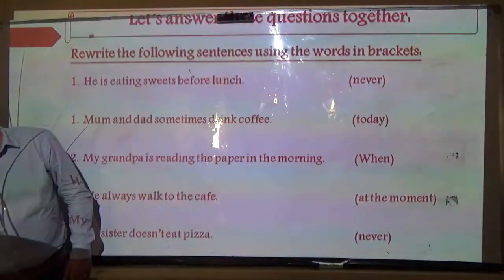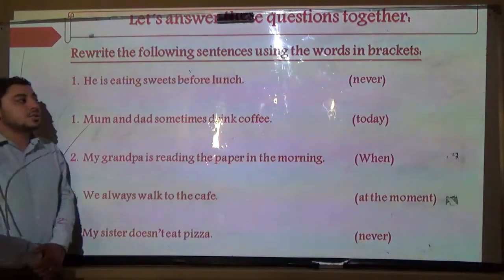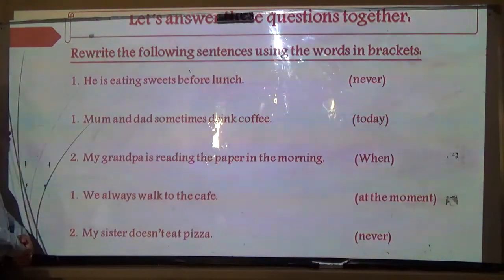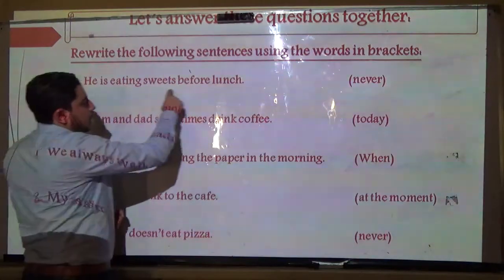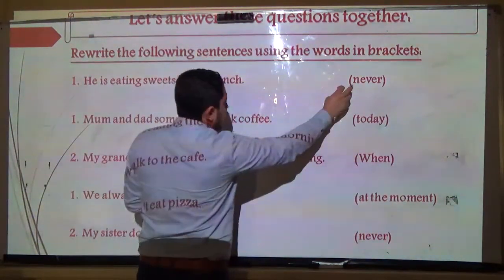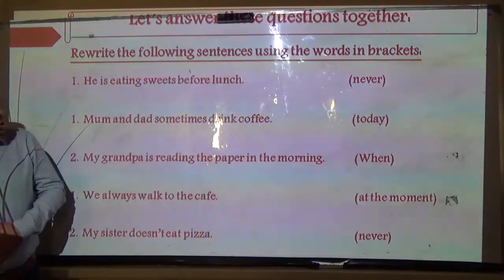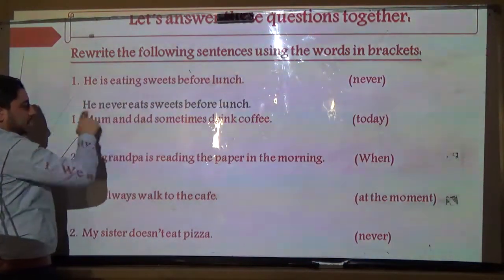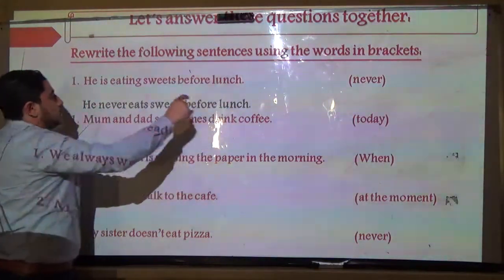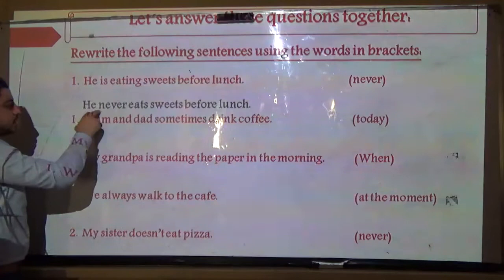Let's answer the practice questions together — rewrite the following sentences using the words given. Number one: 'He is eating sweets before lunch' — change to 'never.' Since 'never' is a present simple time marker, we remove 'is...ing' and add S to the verb. Answer: 'He never eats sweets before lunch.'